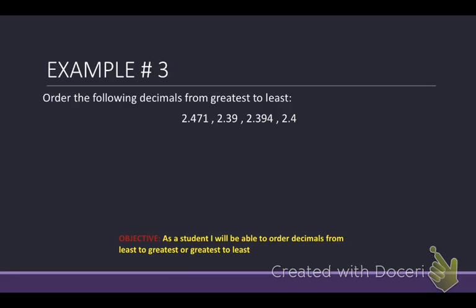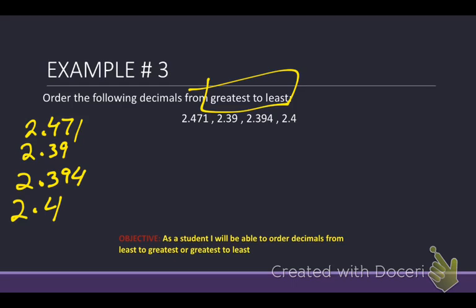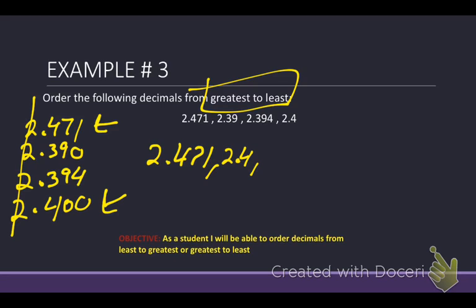Example number three, same thing. Line up your decimals. 2.471. We have 2.39. We also have 2.394, and 2.4. So we're looking for, this time though, greatest to least. Make sure you read it. Put your zeros as placeholders. We went to the greatest one. Well, we have 2.4. Those are all twos. So we have 2.47 and 2.40. So the biggest one is 2.471. Okay, we also had 2.40 or 2.4. So both of those are done.